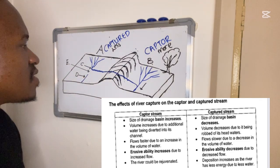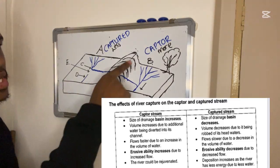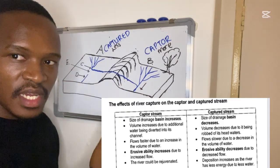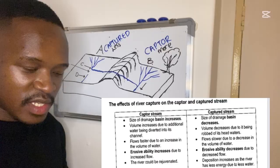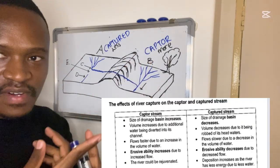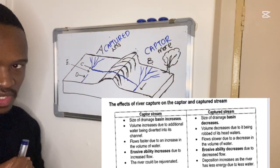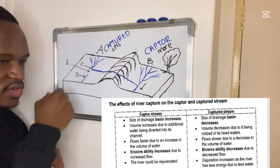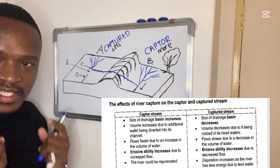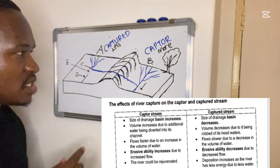To summarize: the captor stream gains increased volume, faster flow, and more erosive power — this can even lead to river rejuvenation. For the captured stream, the drainage basin is reduced, erosive ability decreases, there is less water, and there will be more deposition as a result.